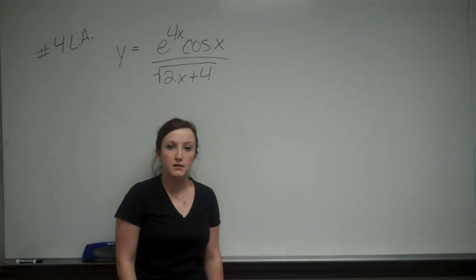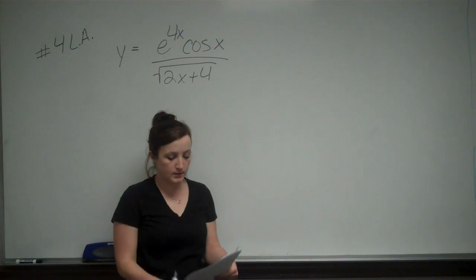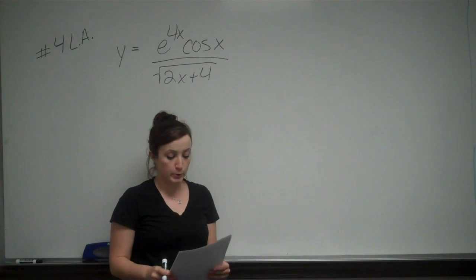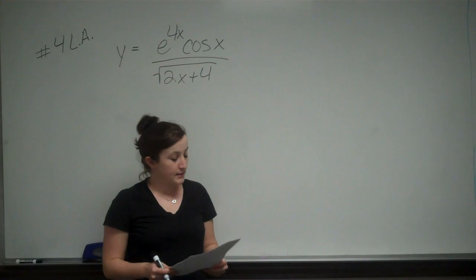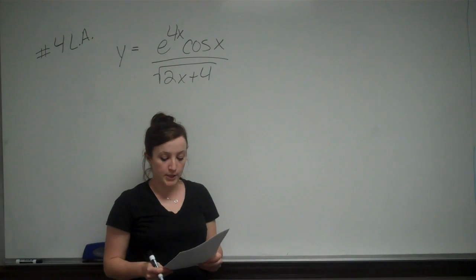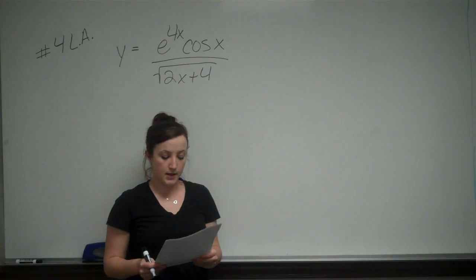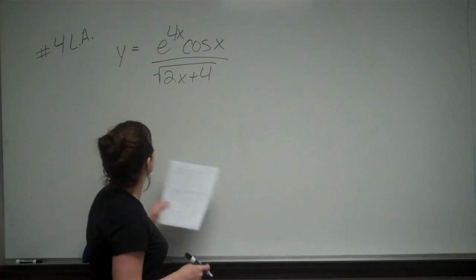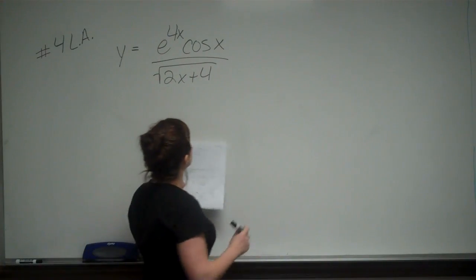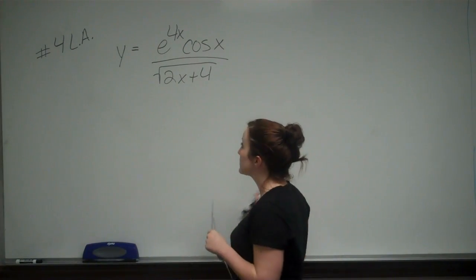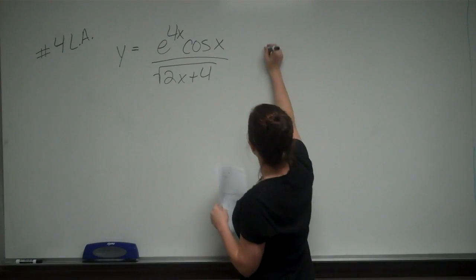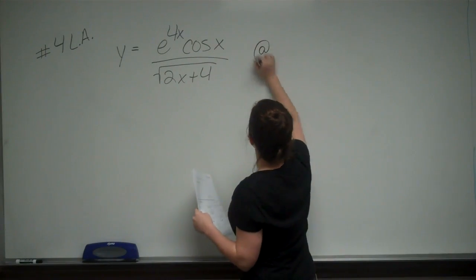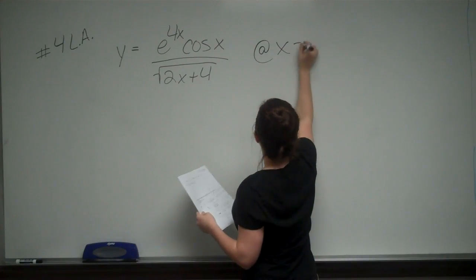This is problem number four on the long answer portion of your test. This asks us to use logarithmic differentiation to find the slope of the tangent line to y equals e to the 4x cosine x over the square root of 2x plus 4, at x equals 0.